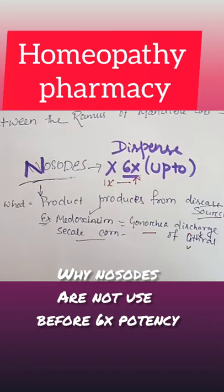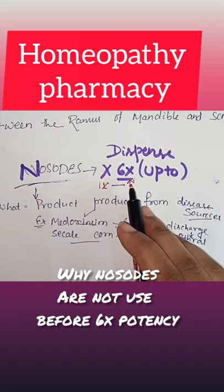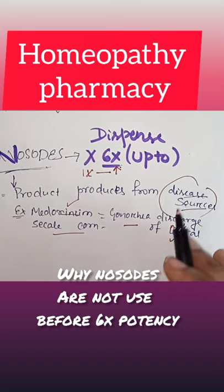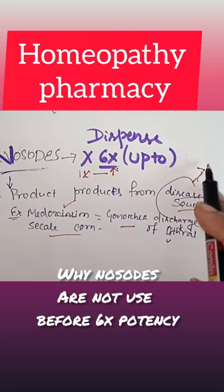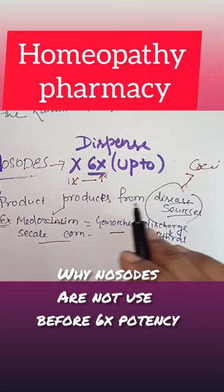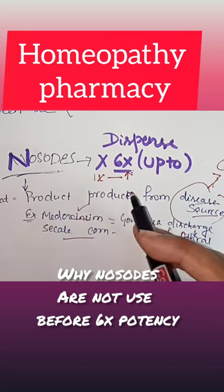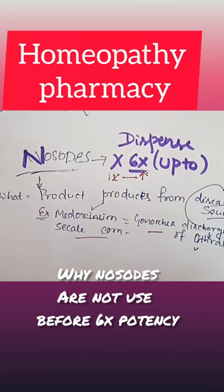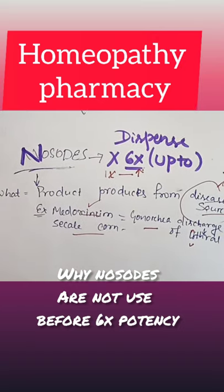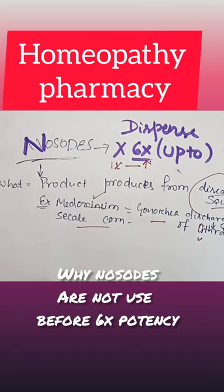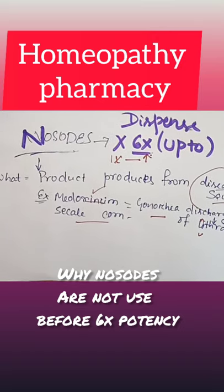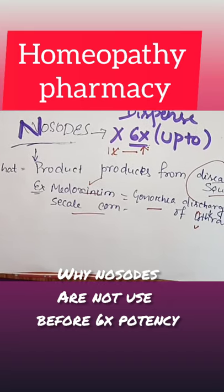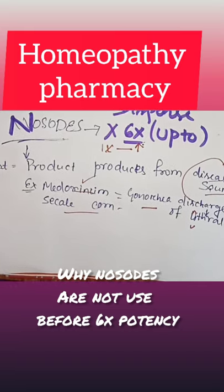The scientific reason is that nosodes are derived from diseased matter, and diseased matter contains bacteria, viruses, or cocci. When these cocci or viruses are used below the 6th potency, they can still be present in the preparation. After the 6th potency, Avogadro's number is reached, so only a minute quantity of the drug remains, making it safe to use nosodes at that potency.